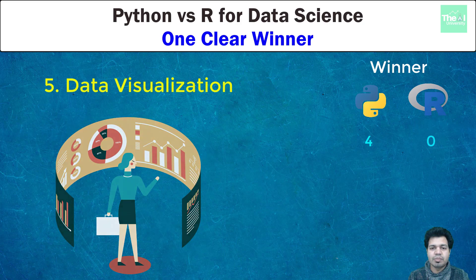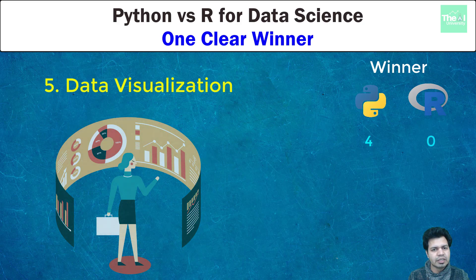The fifth parameter is data visualization. R is majorly built for performing statistical analysis and hence has libraries which can do scientific visualizations as well. Important visualization libraries in R are ggplot2, leaflets, dygraphs, lattice, etc., using which you can create a variety of charts. You can also create web-based dashboards using Shiny.